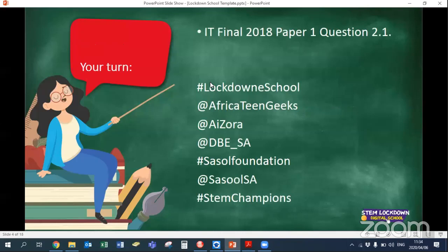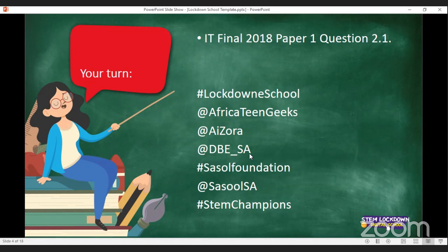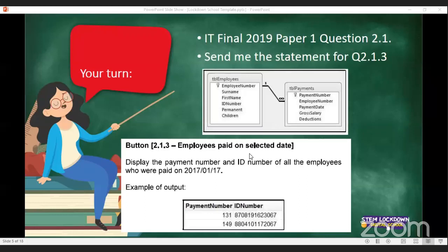Now I want you to type the answer to this question. Here are your tables and all the information you need. This was from the 2019 final exam, question 2.1.3. It says: display the payment number and ID number of all employees who were paid on the 17th of January 2017. That is what your output should look like. Let's see if you can do the SELECT statement.